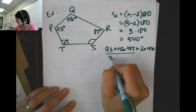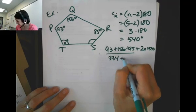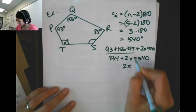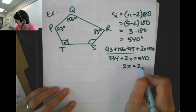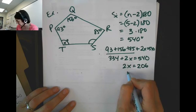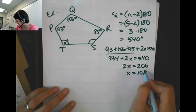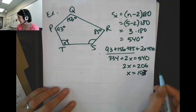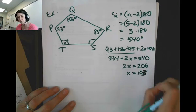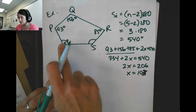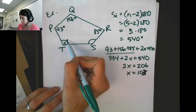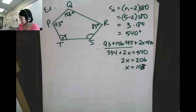Add these guys up. Subtract 334 from both sides. And I'm going to just do this math for you and divide by 2. x equals 103. x doesn't equal 103 degrees. It's not 103 degrees degrees. x equals 103, because the degree symbol is here.